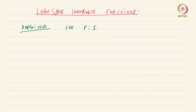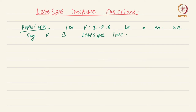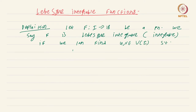Let f from I to ℝ be a function. We say f is Lebesgue integrable — sometimes just 'integrable', since for the rest of this course we will deal only with the Lebesgue integral — if we can find two upper functions u and v such that f is nothing but the difference u minus v.